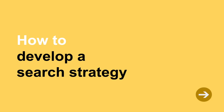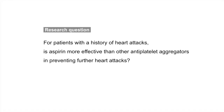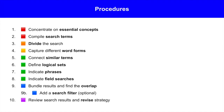Let's explore how to develop a search strategy. In this demonstration, we'll find research literature to answer the following question: for patients with a history of heart attacks, is aspirin more effective than other antiplatelet aggregators in preventing further heart attacks? We'll search the PubMed database and follow these strategy development procedures: concentrate on essential concepts, compile search terms, divide the search, capture different word forms, connect similar terms, define logical sets, indicate phrases, indicate field searches, bundle search results, find the overlap, add a search filter, and review and revise the strategy.